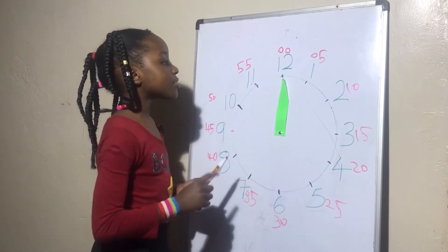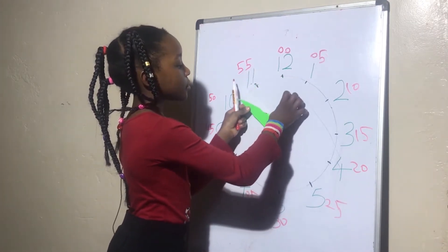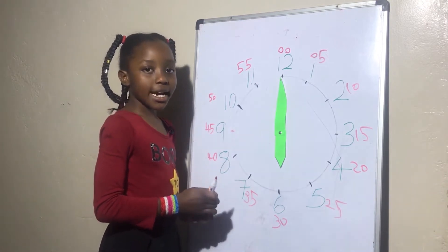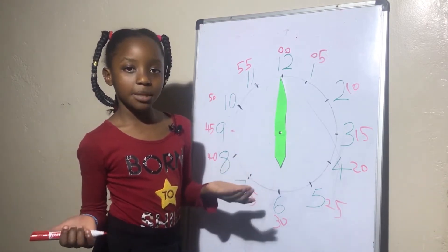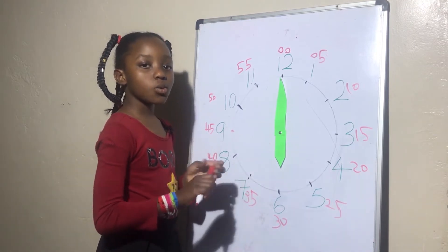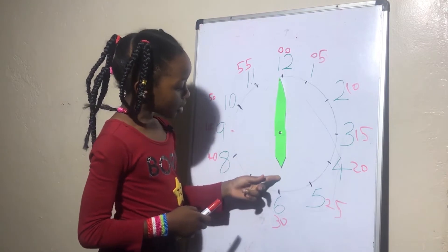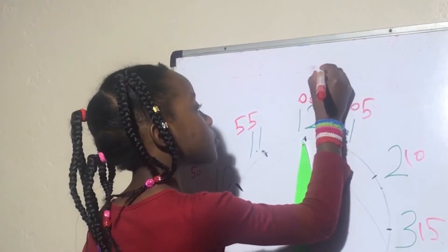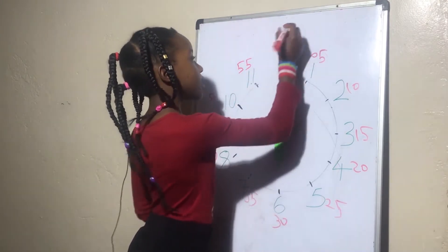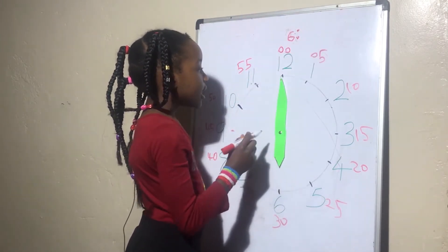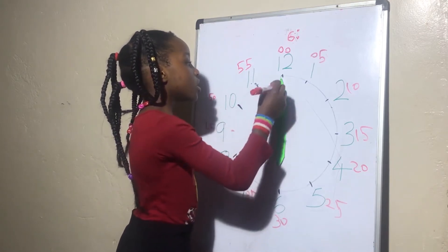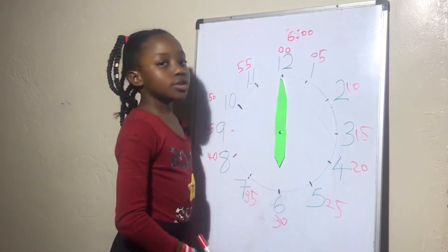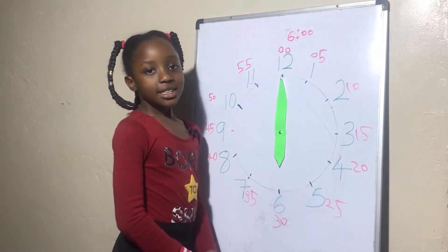Now let's continue telling time. Let's tell time with three easy steps. The first step is to look at where the short hand is pointing. The short hand is pointing at six. First we start with the short hand, then we write the two dots, then we look at where the long hand is pointing, which is at the two zeros. Now we write 00. Now do you know what time it is? It is 6 o'clock.